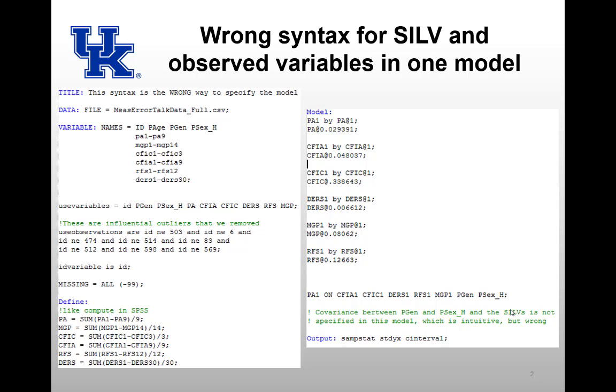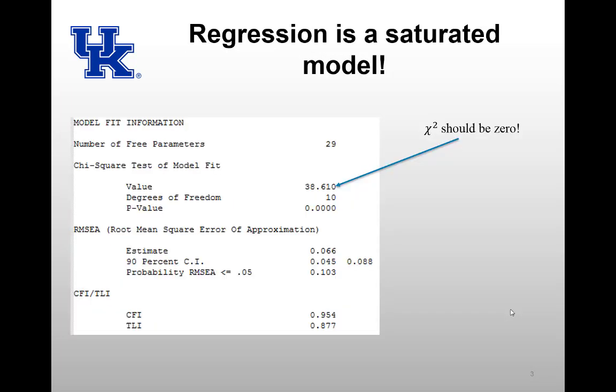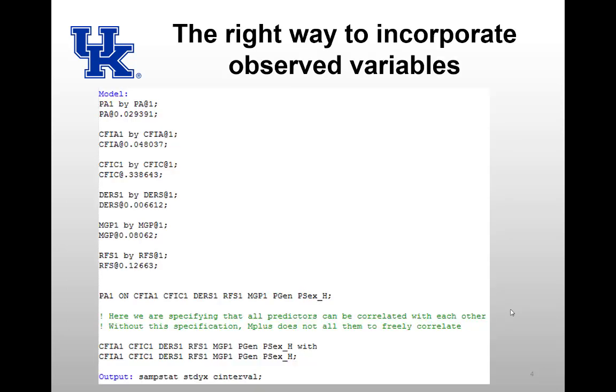And the way that this model is set up, PA1 on all of the predictor variables, is sort of the, to me, intuitive way to set up the regression model. Unfortunately, it's not correct. If you were to run this model, you would get a nonzero chi-square test of model fit, which doesn't make sense because this is a regression model; it's saturated, chi-square should be zero.